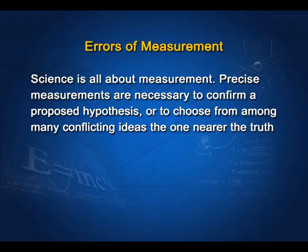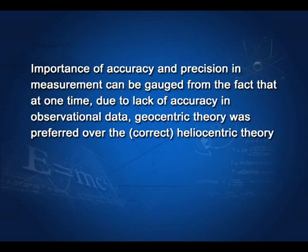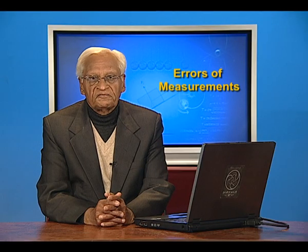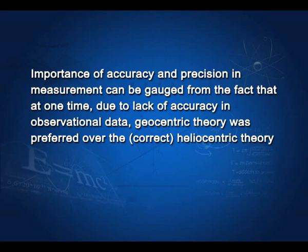Precise measurements are necessary to confirm a proposed hypothesis or to choose from among many conflicting ideas the one that is nearer the truth. The importance of accuracy and precision in measurement can be gauged from the fact that at one time, due to lack of accuracy in observational data, the geocentric theory was preferred over the heliocentric theory, whereas the heliocentric theory was the correct one.